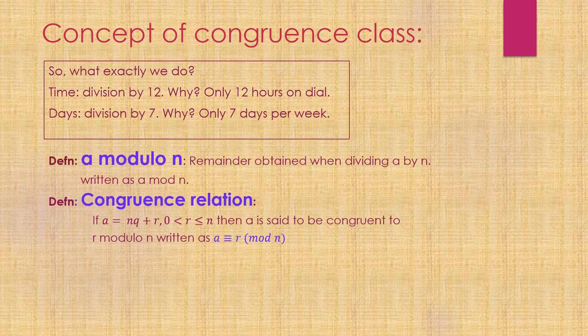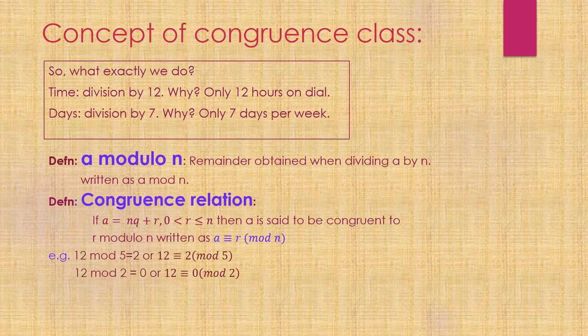That means when I divide a by n, I get remainder r. For example, 12 modulo 5: if I need to find the remainder when 12 is divided by 5, I know it is 2. The same thing can be said in terms of congruence relation as 12 is congruent to 2 modulo 5.